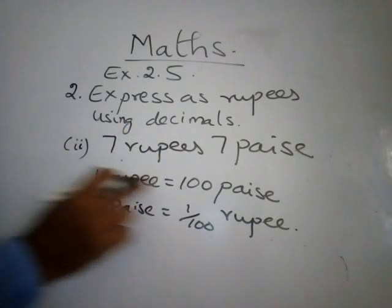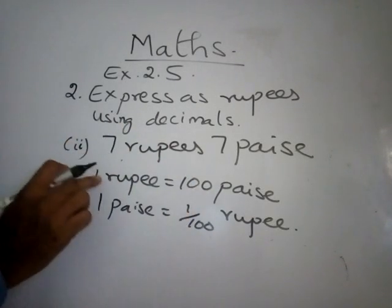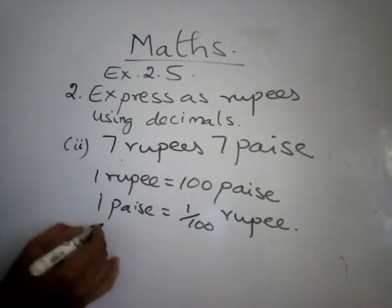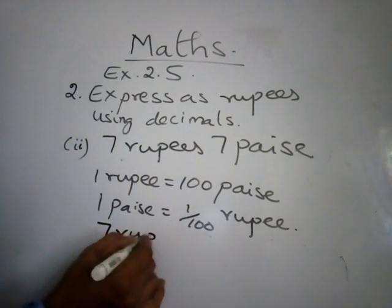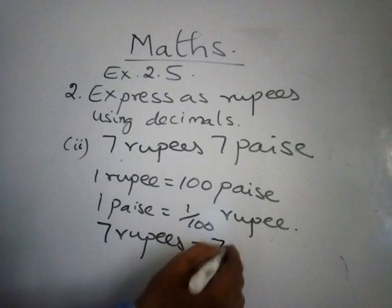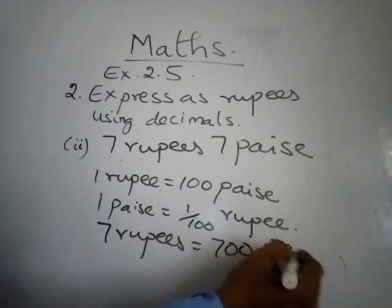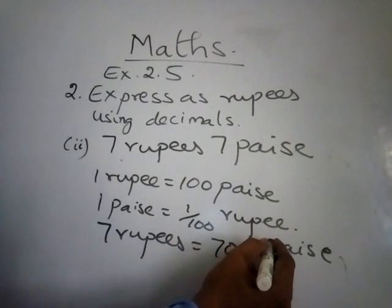So 7 rupees - 1 rupee equals 100 paise means 7 rupees. 2 rupees equals 200 paise, 3 rupees equals 300 paise. So 7 rupees, first let us do this. 7 rupees will be 700 paise. Take this data separately and then we will add the second data.